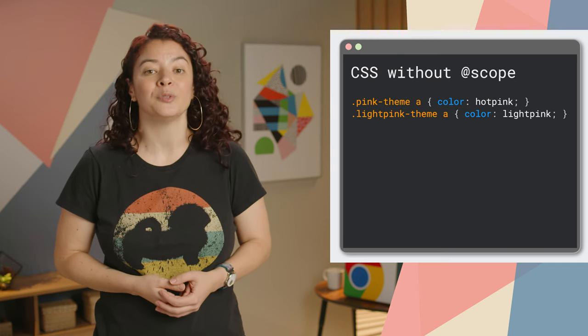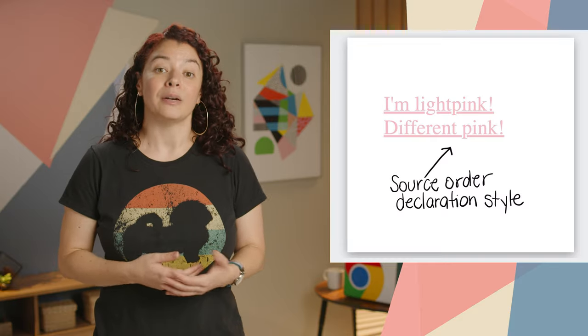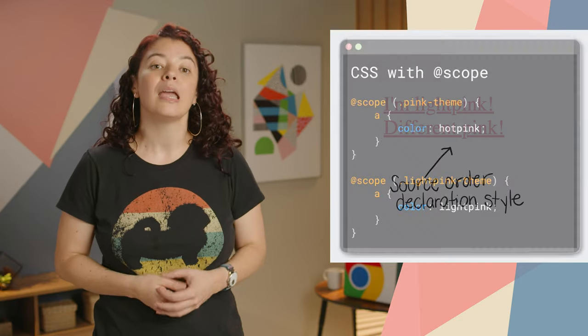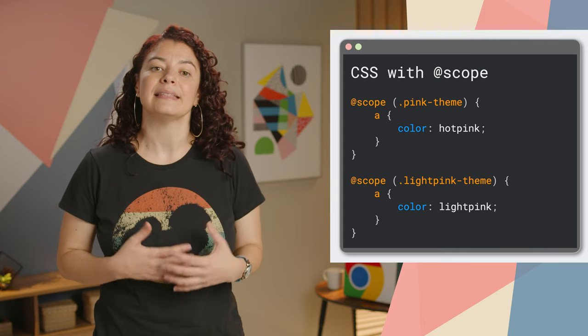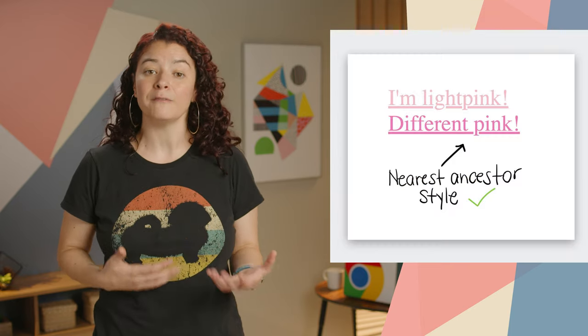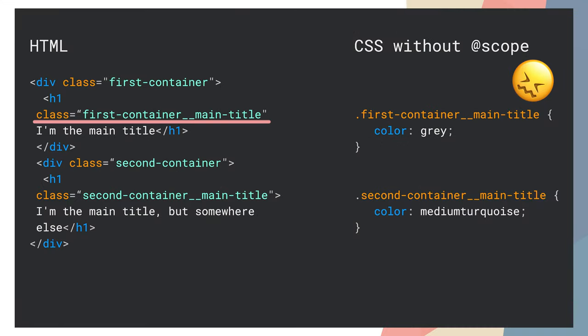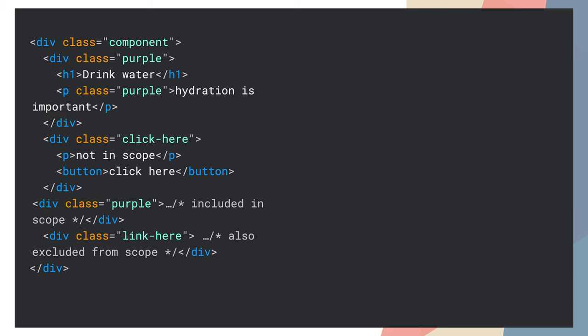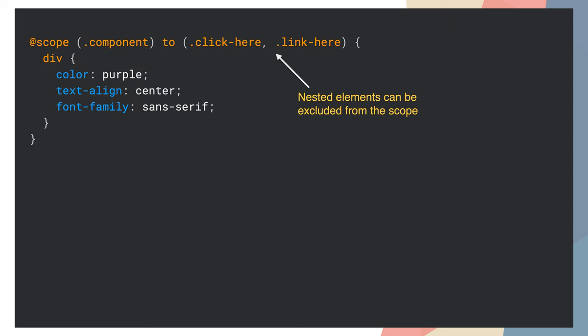In the example on the screen, we have two themes. Without scope, the style applied is the last one declared. With scope, you can have nested elements and the style that applies is the one for the nearest ancestor. Scope also saves you from writing long convoluted class names, making it easy to manage larger projects and avoid naming conflicts. With scope, you can also style a component without styling certain things nested within it.